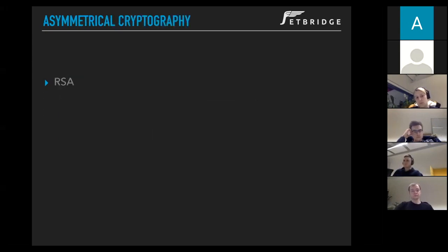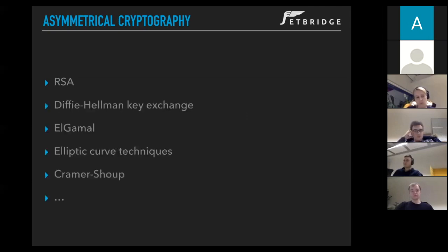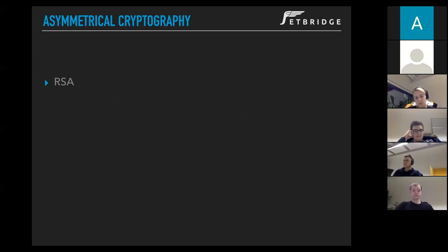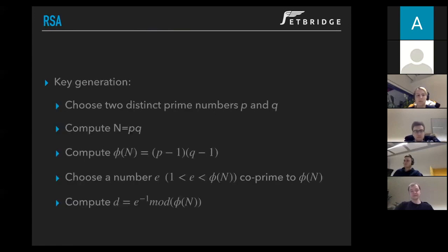Now let's move on to asymmetrical cryptography, and we'll be talking about RSA. There are many different algorithms in that group, but RSA is the most notable and pretty simple to explain. The algorithm was founded by Rivest, Shamir, and Adleman — that's where the name RSA comes from.